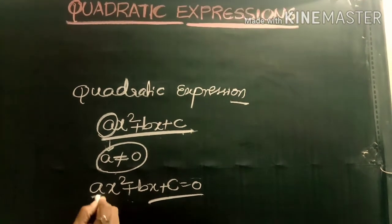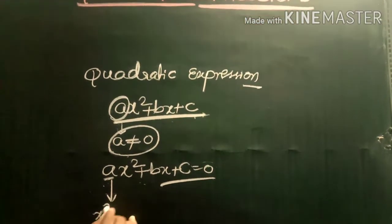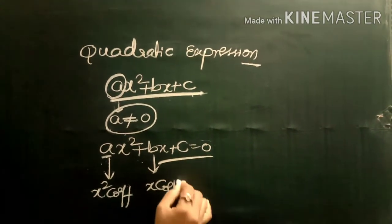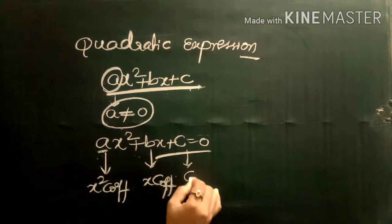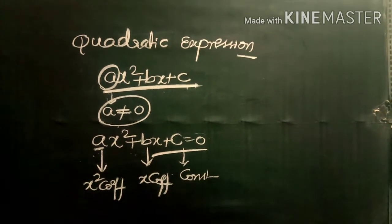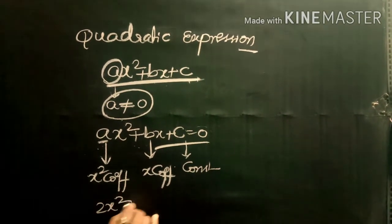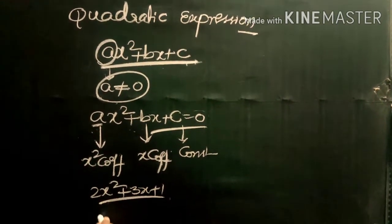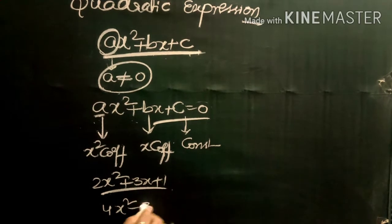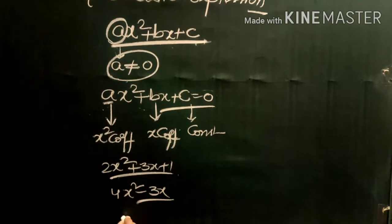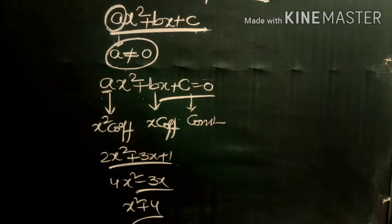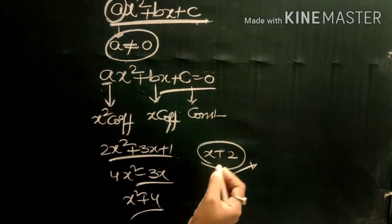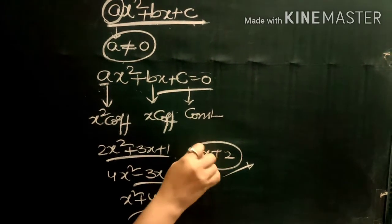In this equation, 'a' is called the x² coefficient, 'b' is called the x coefficient, and 'c' is called the constant. Examples: 2x² + 3x + 1 is a quadratic expression; 4x² − 3x is a quadratic expression; x² + 4 is a quadratic expression. But x + 2 is not a quadratic expression since it doesn't contain the x² term.